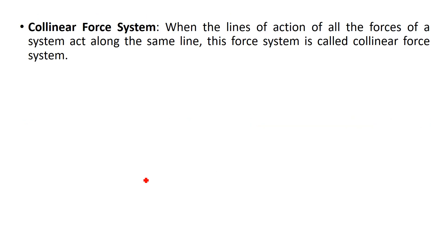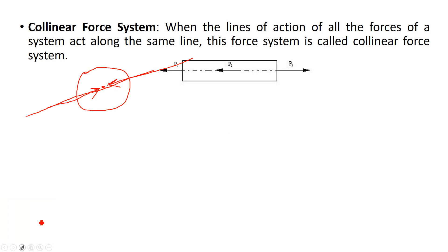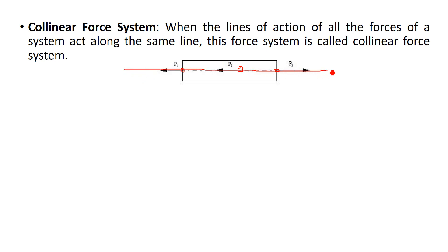Collinear force system means when the line of action of all forces acting on a body are in the same line. For example, if you consider a rectangular bar with three forces acting at different points, but drawing the line of action of all three forces reveals it is the same common line. These forces are called a collinear force system.